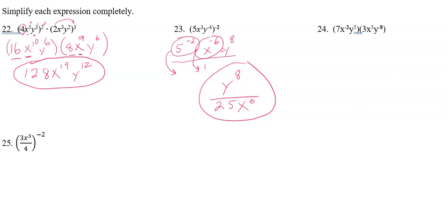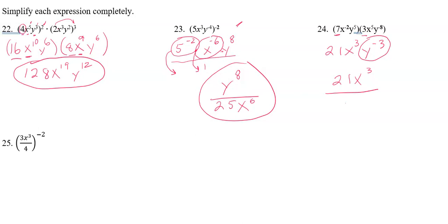Number twenty-four: multiply the coefficients — 7 × 3 = 21. For x's, add exponents: −2 + 5 = x³. For y's, add exponents: 5 + (−8) = y⁻³. y⁻³ is the only term needing adjustment; move it to the denominator to become y³. The answer is 21x³ over y³.